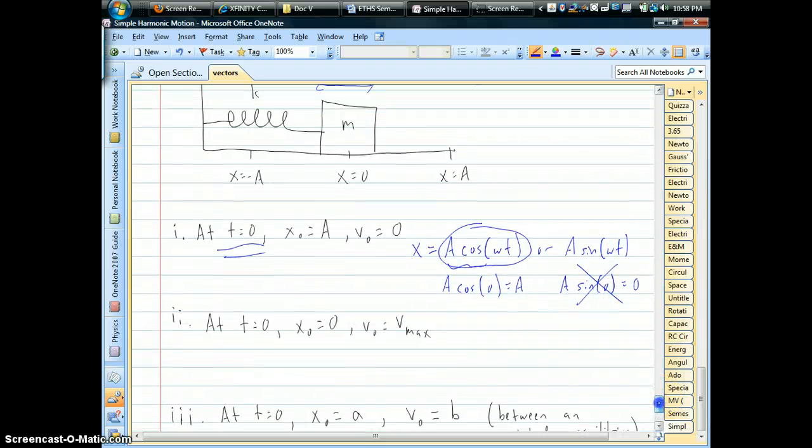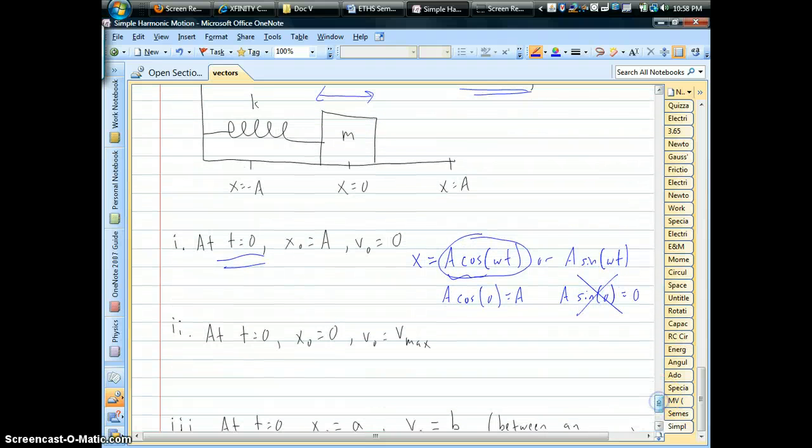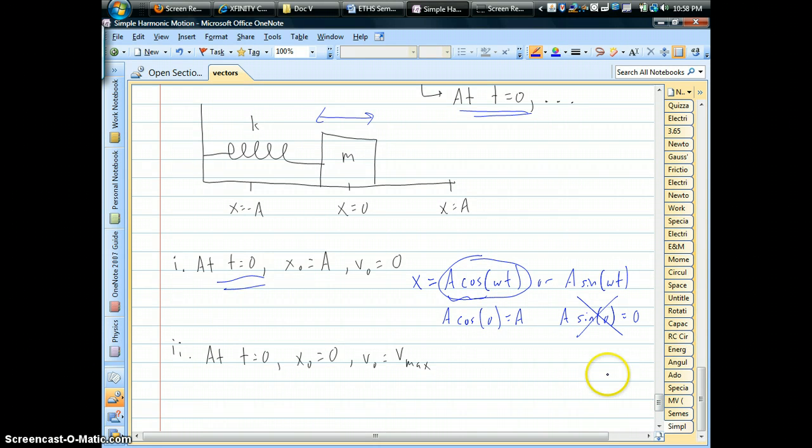Now, compare that to if you had a different set of initial conditions where when time equals zero, you're at equilibrium. In other words, you're moving, and in that snapshot, you're moving the fastest.